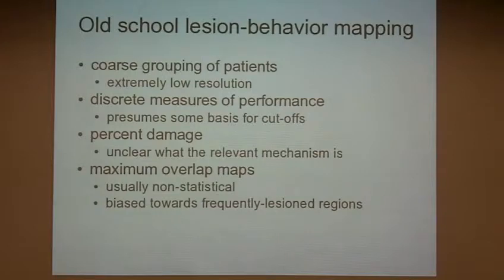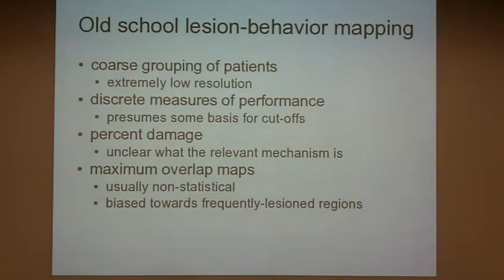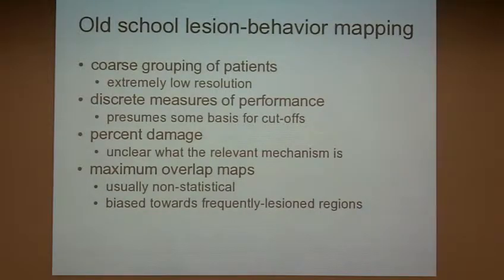Similarly, there are discrete measures of performance. When we do VLSM, we tend to look at continuous behavioral measures — accuracy or error scores. But traditionally, more commonly in the past, people looked at discrete measures of performance: impaired or intact behaviorally on some behavior of interest. Discrete measures of performance with no particular reason for choosing a behavioral cutoff have gone out of fashion a little bit. These first two approaches — turning either lesion location or performance measure into a discrete binary measure — are forms of data reduction.